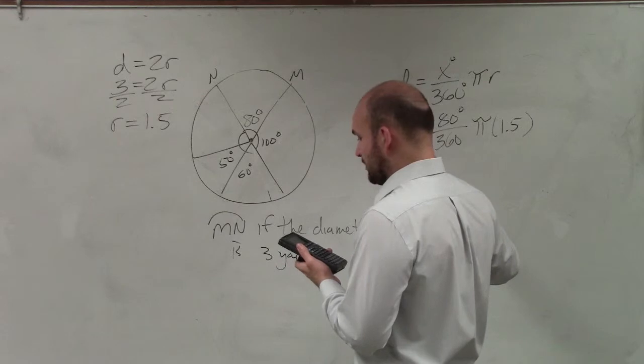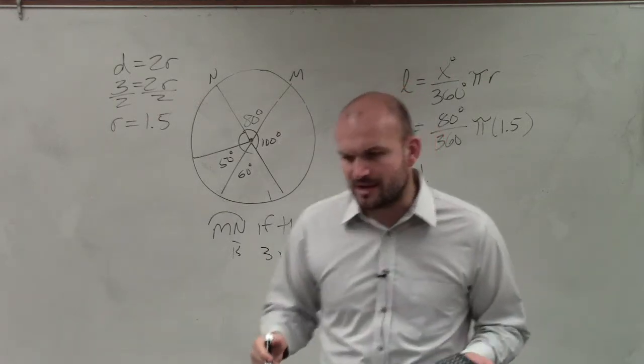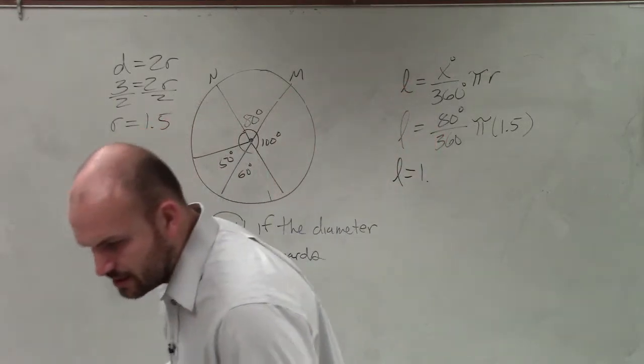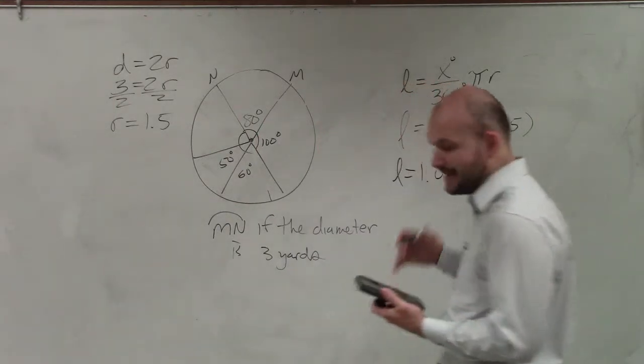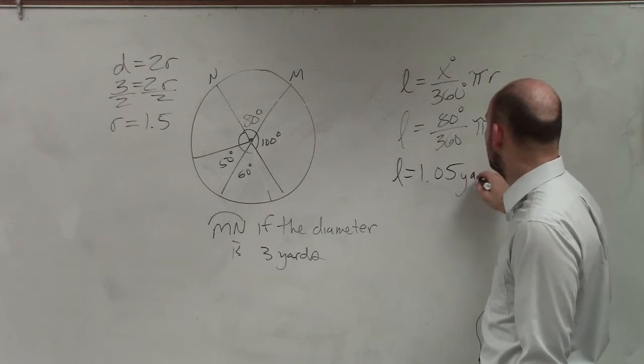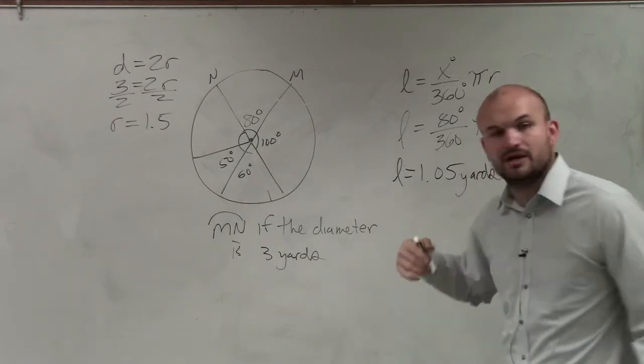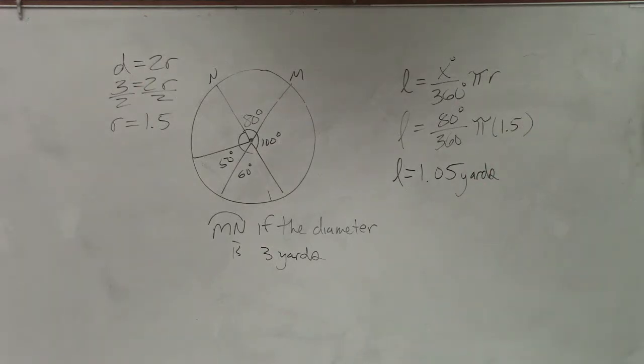L equals 1 point—what does it round to, the hundredth or the tenth? The hundredth. So we're going to round that to 1.05. And since we're just talking about distance, it's going to be yards. We're not talking about area or volume, just direct distance. So it's one dimensional, and it'll just be yards.